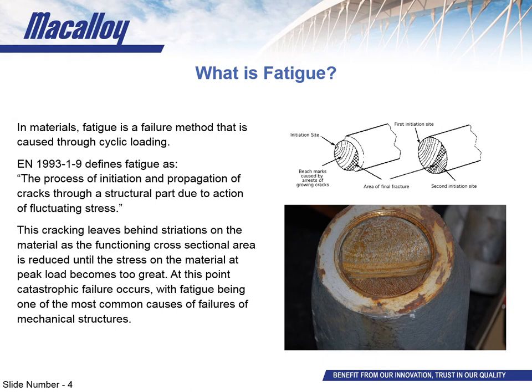As cracking makes its way through the material you get a seashore-like interface leaving behind striations on the fracture face where the crack initiated and then propagated. This crack reduces the cross-sectional area at that point until it can no longer cope with the applied load — at which point it experiences what's known as a catastrophic failure. You can see examples: the top diagram shows crack propagation and striations, and the bottom image shows a real case where the crack started at the top, grew through the bar's cross-section, and then completely snapped.